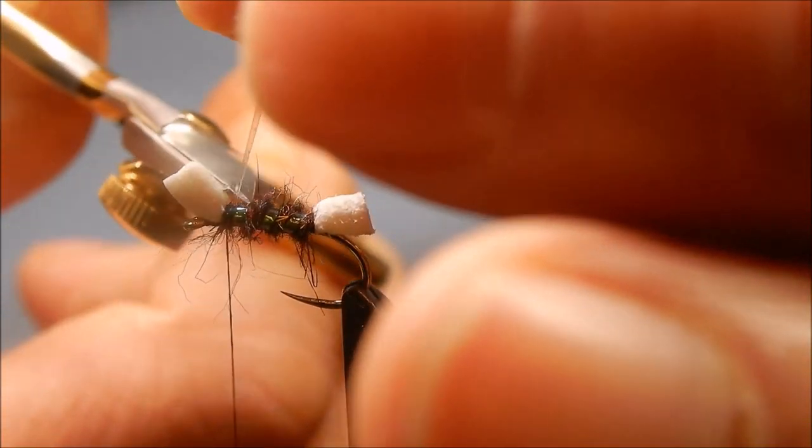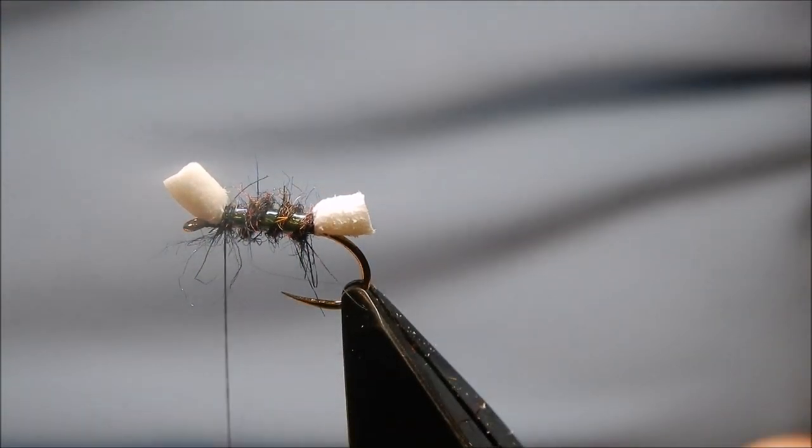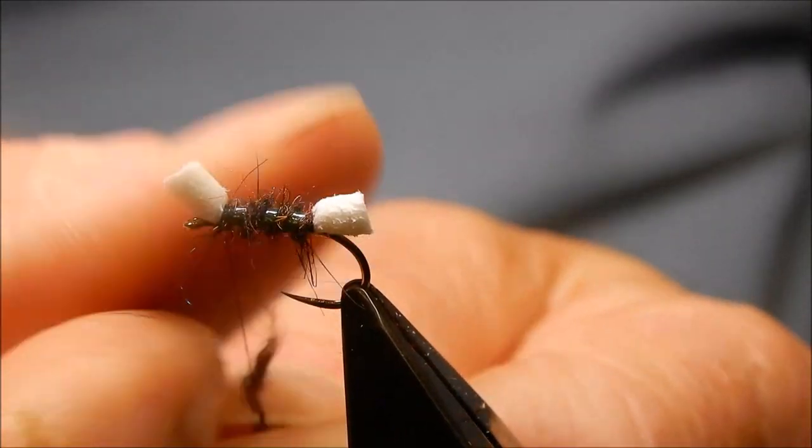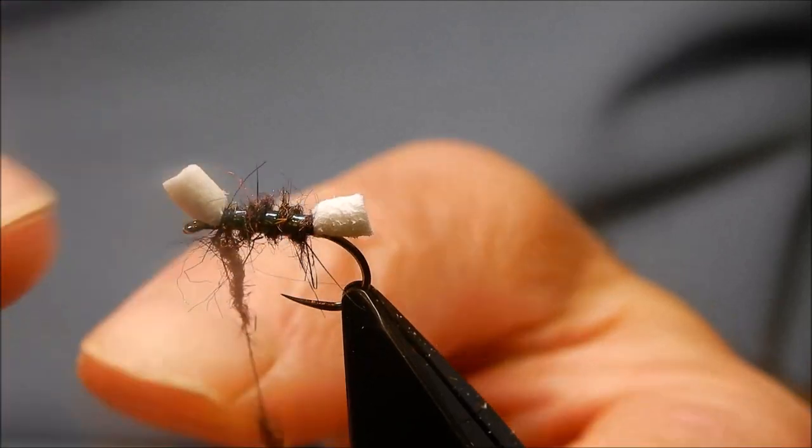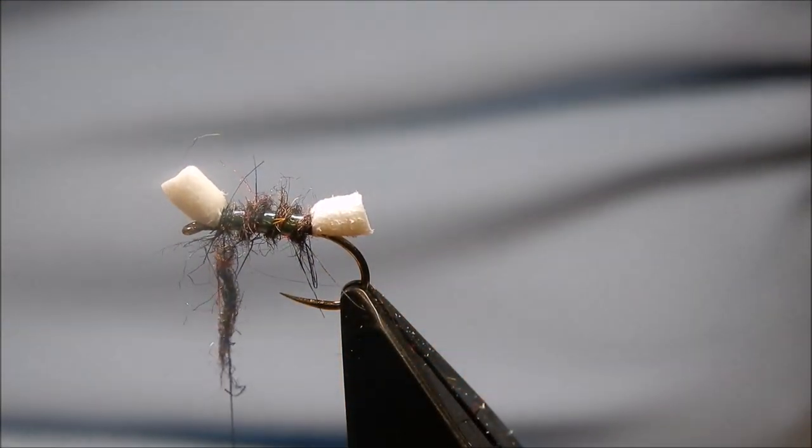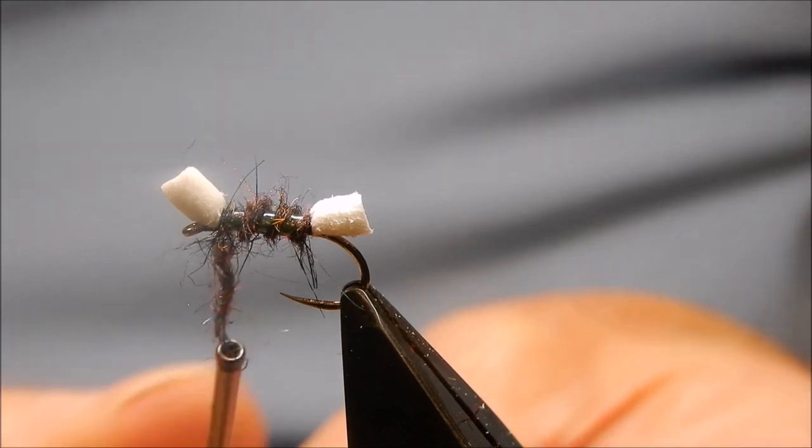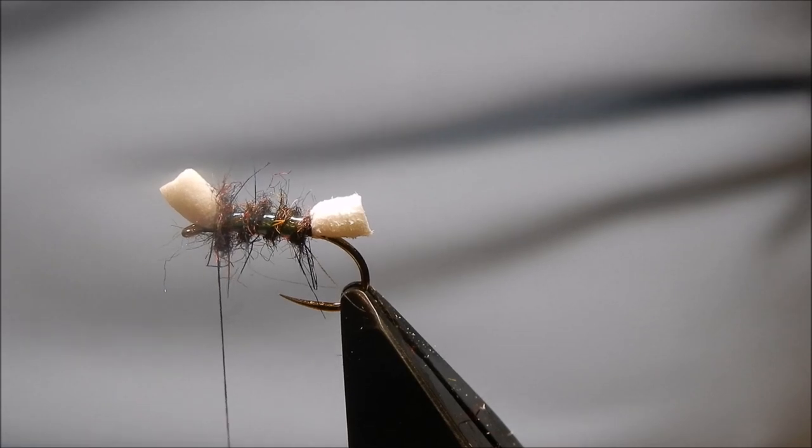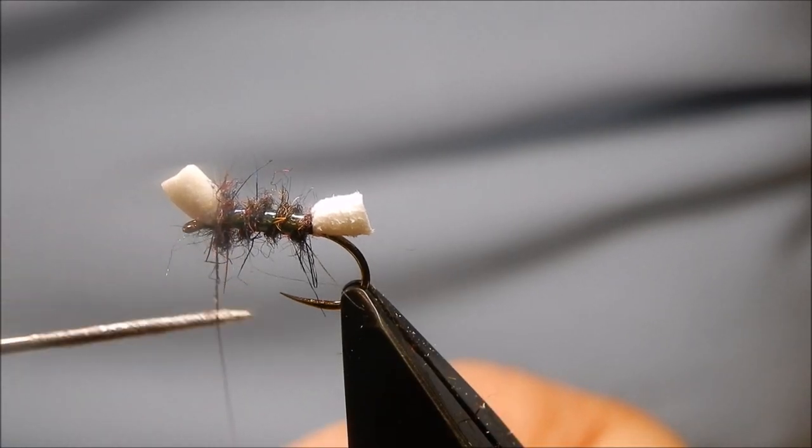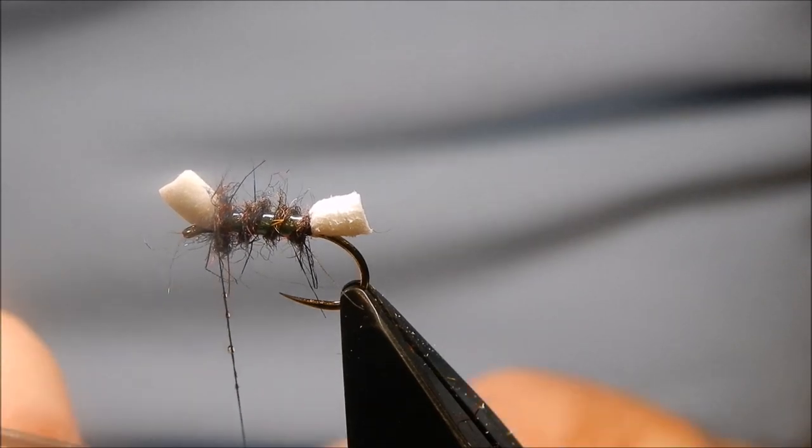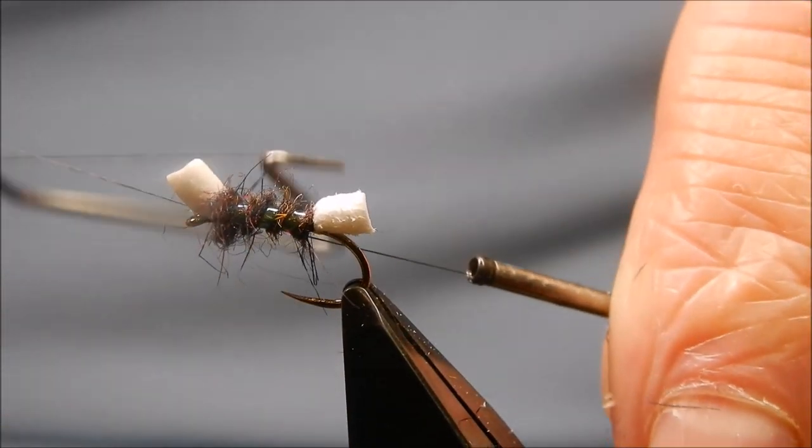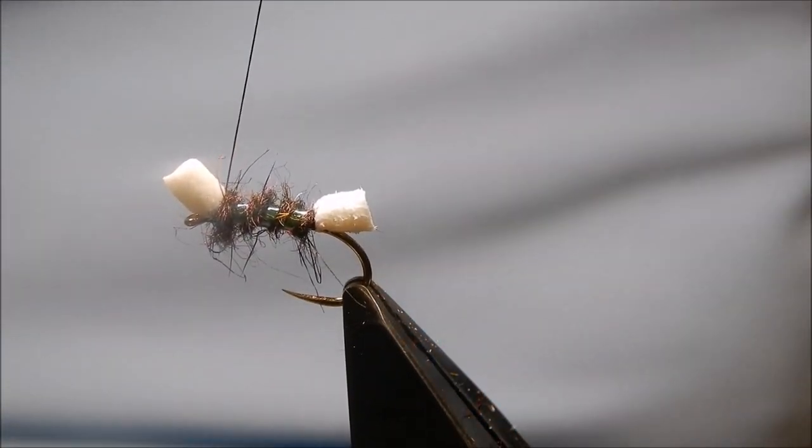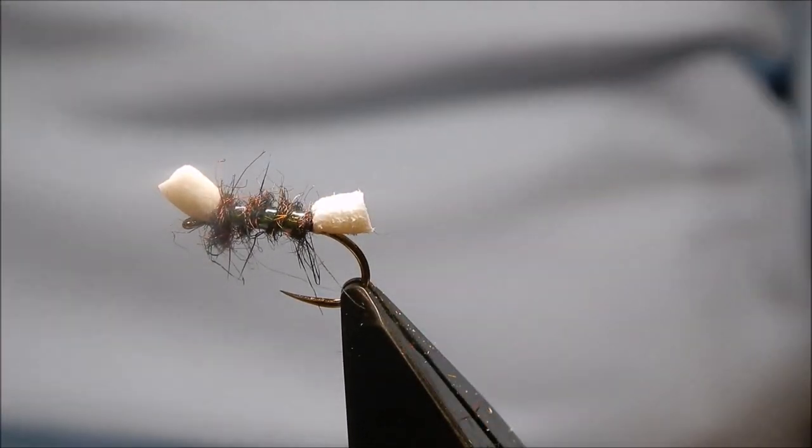So I fished one of these on the point with foam body. Maybe a buzzer on the dropper and the ordinary Shipman's on the top dropper. The buzzer will help to sink the leader. Bit of varnish, exactly the same procedure. You can tie off under the foam if you like. It's a fairly simple fly. Good starter fly for starter fly tyers. Easy to get proportions.